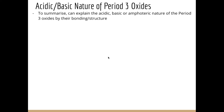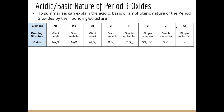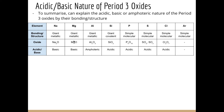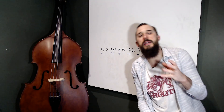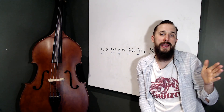To summarize, we can explain the acidic, basic, or amphoteric nature of our period three oxides based on their bonding and structure. Giant metallic structures for sodium, magnesium, and aluminium; giant covalent for silicon; and simple molecular for the rest. Sodium oxide and magnesium oxide are basic, forming hydroxides in solution. Aluminium oxide is amphoteric, neutralizing either an acid or a base. The covalent oxides all act as acidic. Moving left to right, the period three oxides go from basic to amphoteric to acidic.